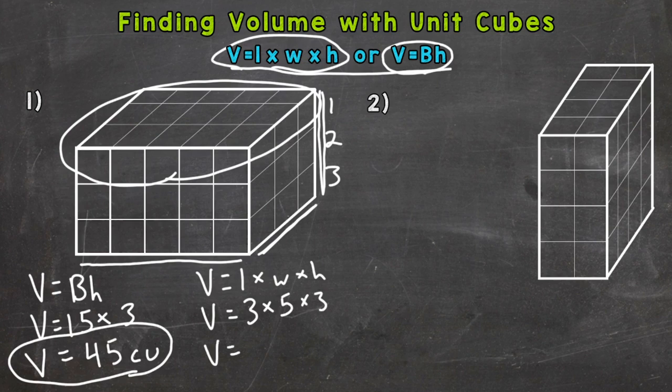And this will get to three times five is 15. Times that three gives us 45 cubic units. So both formulas give us the same answer. And that will happen for every rectangular prism.